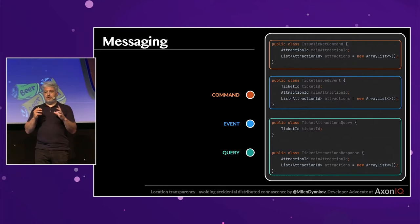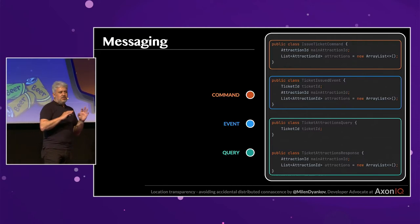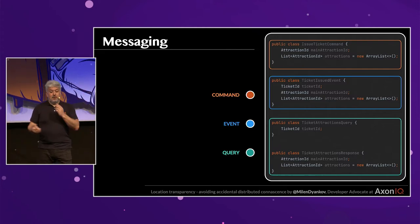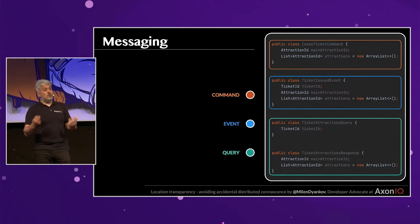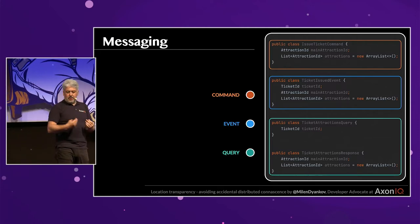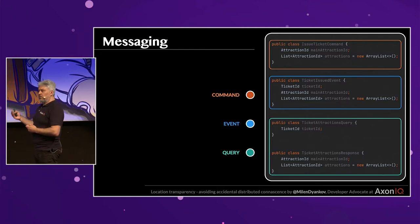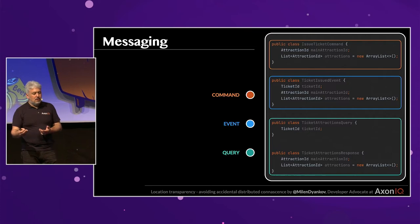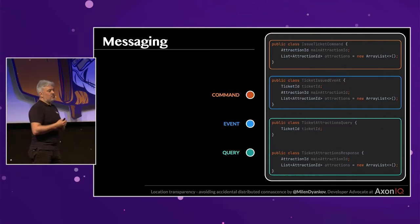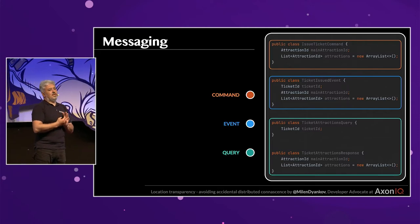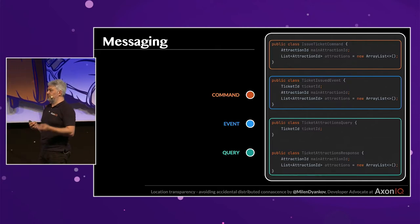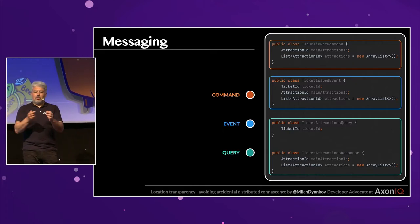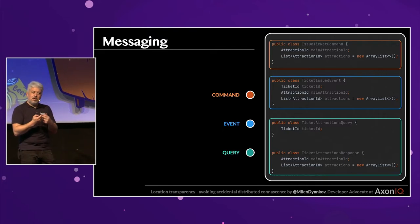Let's see some examples of how we can theoretically build those. We represent those three types of messages as Java classes — plain POJOs. Here you have an IssuedTicketCommand, which is a command. You have a TicketIssuedEvent, which is an event notifying that a ticket was issued. Then you have a TicketAttractionsQuery, which you can use to ask the system which attractions this ticket applies to. The last one also provides the information of what response type you expect — in this case, a TicketAttractionsResponse. That's it: we model our messages so we know what they are.